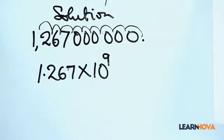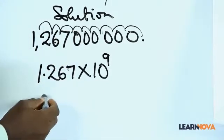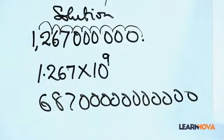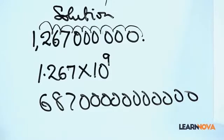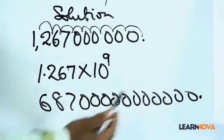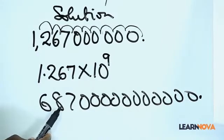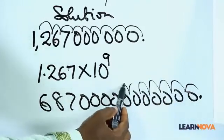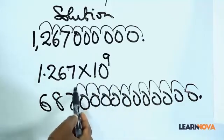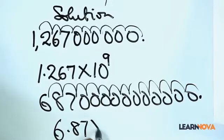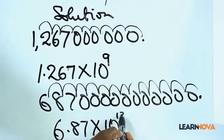This can be done with any other number. For example, if I write 6,870,000,000,000,000 — let's see if you understood what we just did. To write this in standard form, place a decimal point at the end, then move it between the six and the eight. Counting the places: one, two, three, four, five, six, seven, eight, nine, ten, eleven, twelve, thirteen. So this number in standard form is 6.87 multiplied by 10 raised to the power 13.